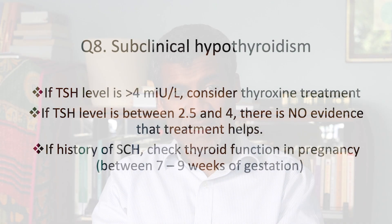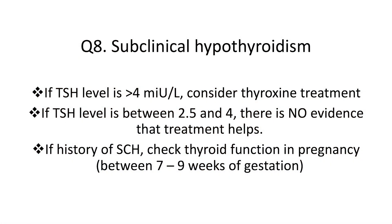Question 8: How should you manage subclinical hypothyroidism? If TSH level is more than 4 milli-international units per litre, thyroxine treatment can be considered. Many clinicians would treat very mild subclinical hypothyroidism defined as TSH between 2.5 and 4, but there is no evidence to support this. Just like women with thyroid antibodies, women with subclinical hypothyroidism should have their thyroid function tested in early pregnancy, around 7–9 weeks.